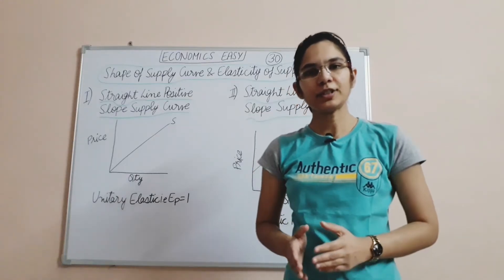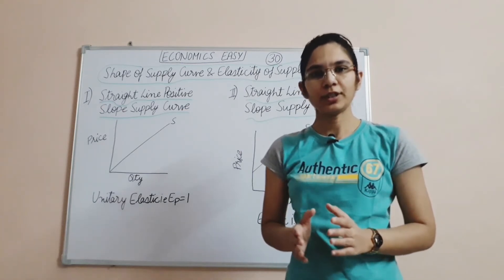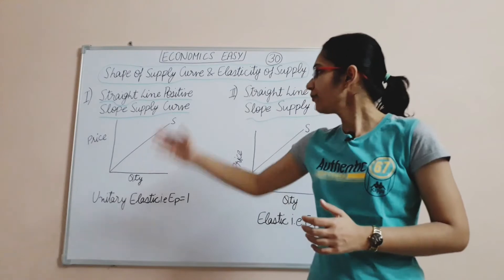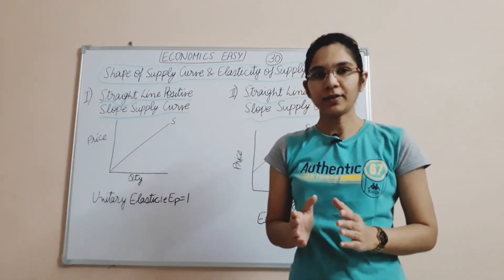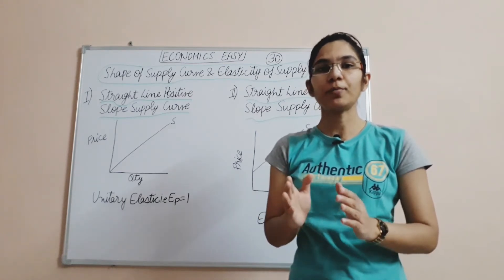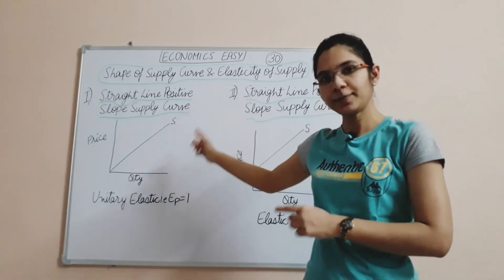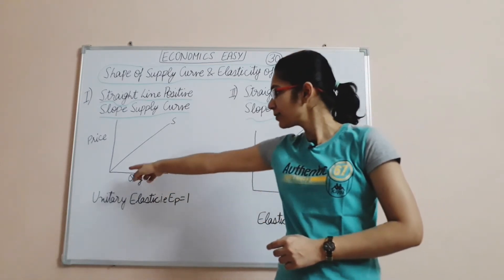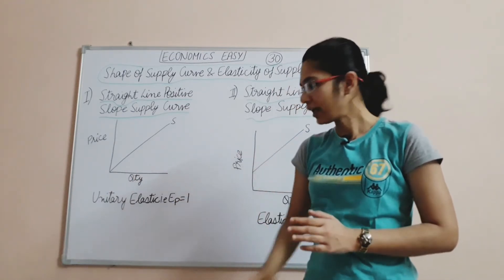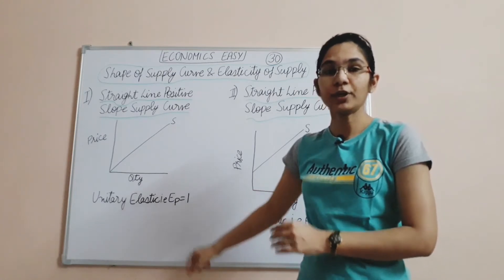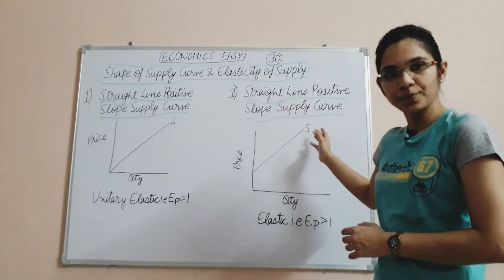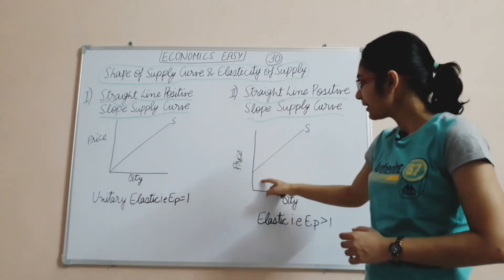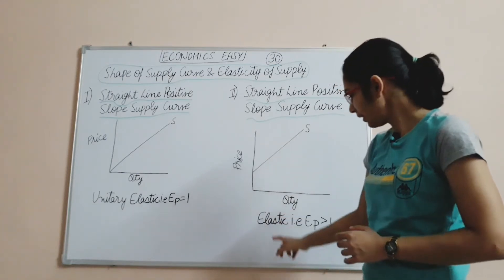Friends, let's see: what will be the shape of supply curve and elasticity of supply? The shape of supply curve indicates the degree of elasticity of supply. Basically, there will be 3 cases and 2 extremes. First, let's assume the supply curve is a straight line with positive slope. Positive slope means it will slope upward. We have price on the Y axis and quantity on the X axis.